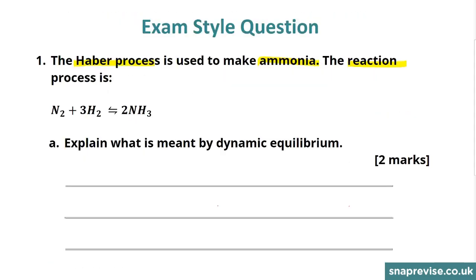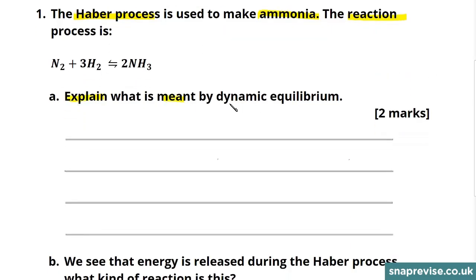In the first part of the question, we're asked to explain what is meant by a dynamic equilibrium. A dynamic equilibrium can be set up by a reversible reaction that's taking place in a closed system. When a reaction is at dynamic equilibrium, the rate of the forward reaction is exactly equal to the rate of the backward reaction.